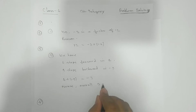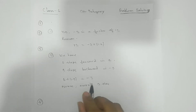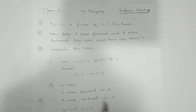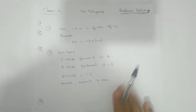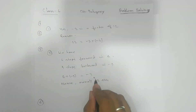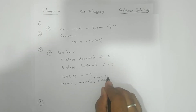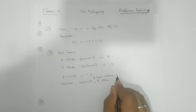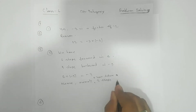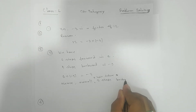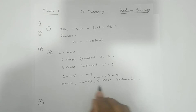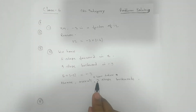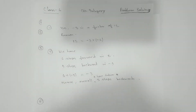So we can say that overall, three steps backward. Overall, I have taken three steps backward. For backward we use minus, so please do not use a minus sign — just write: hence, overall I have taken three steps backward.